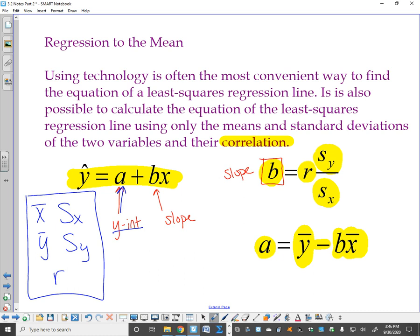If I have that information, then I can first find my slope. I have to find my slope first. So I'm going to use my r and my two standard deviations. Once I get that number, I can find my y-intercept by using the mean of the y's and the mean of the x's and the slope that I just found. So you have to find your slope first.